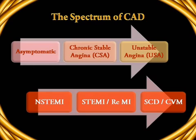Let us look at the spectrum of coronary artery disease. In the majority of individuals, coronary artery disease may be asymptomatic, though they have some definite degree of coronary narrowing. As time passes, some of these people will develop chronic stable angina, then progressive angina leading on to unstable angina. This unstable angina can result in non-ST segment elevation myocardial infarction or ST segment elevation myocardial infarction. Such a patient may recover and may have re-infarction, or he may succumb due to sudden cardiac death or late cardiovascular mortality.